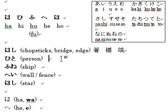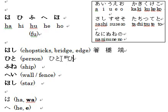Next word is ひと, which you type as H-I-T-O. Then for the kanji for person, H-I-T-O is this one.